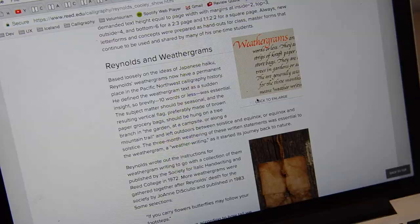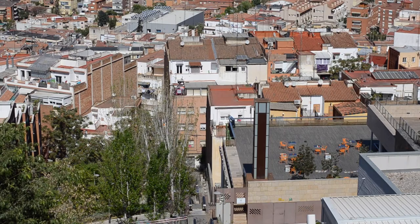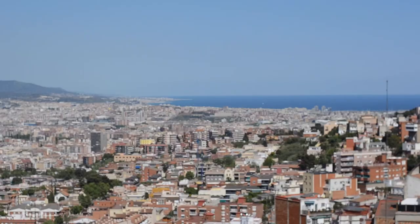The American calligrapher Lloyd Reynolds used to make weathergrams and the idea is to take a piece of paper, write something special on it and then hang it outside to weather. So today I'm gonna make some weathergrams and then hang them outside and let me know in the comments if you follow along and do this too because I would love the idea of weathergrams hanging all around the world.